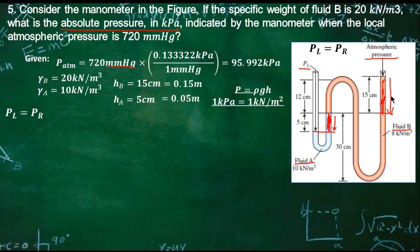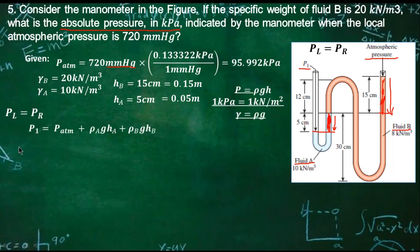Same as the atmospheric pressure — it is also on the right side. So we have our formula: P sub 1 is equal to the atmospheric pressure plus the pressure of fluid A plus the pressure of fluid B.